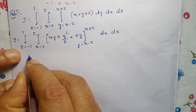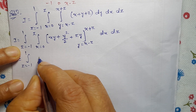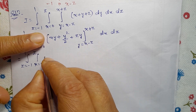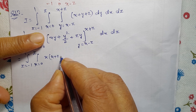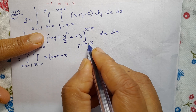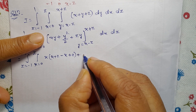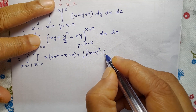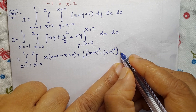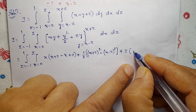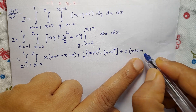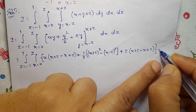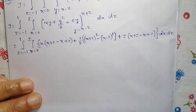Next, equals integral of Z from minus 1 to 1, integral of X from 0 to Z. Apply the Y limits: substitute upper limit X plus Z and lower limit X minus Z into the expression. For the linear term: X into (X plus Z) minus X into (X minus Z). For the quadratic term: one half times [(X plus Z) squared minus (X minus Z) squared]. Plus Z into [(X plus Z) minus (X minus Z)]. Then dx dz.